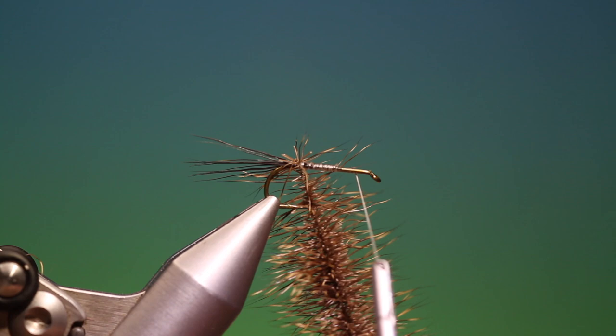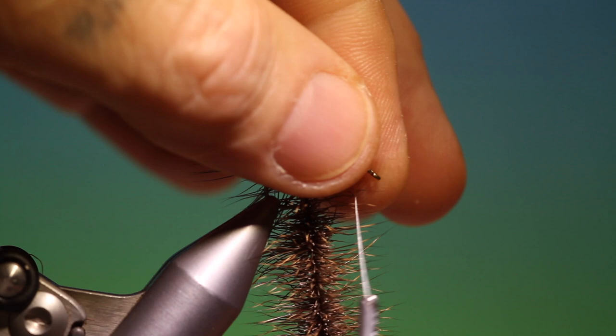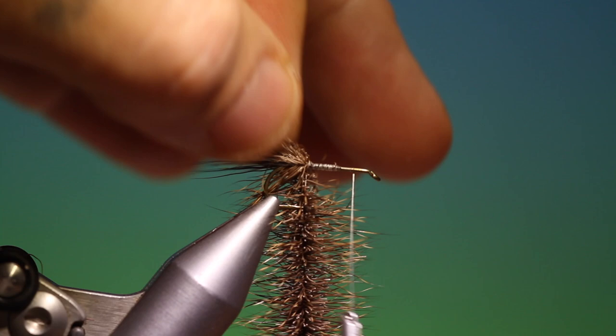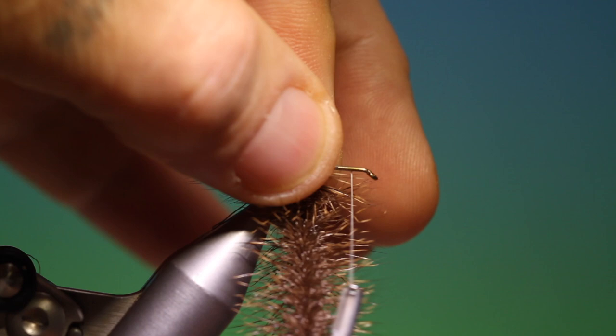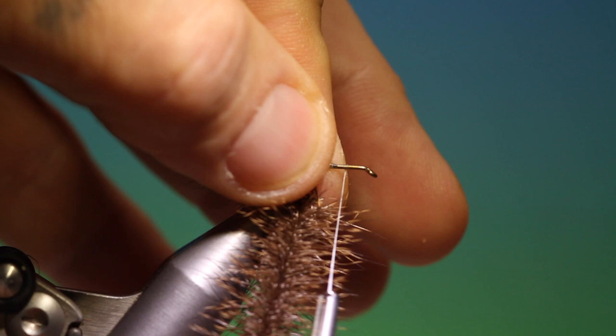Fold back the hairs. Keep this nice and tight into each other each turn. This will give us a denser body. Brushing back the hairs as we go with each turn.